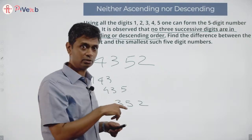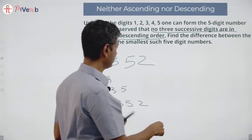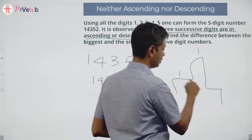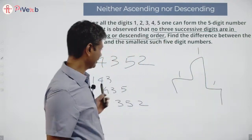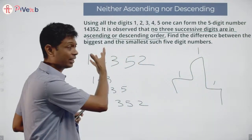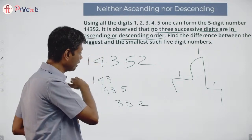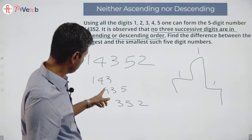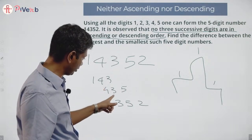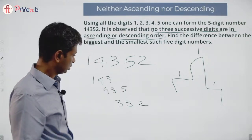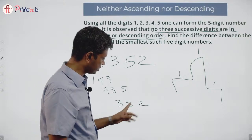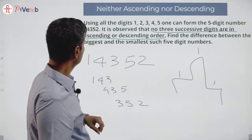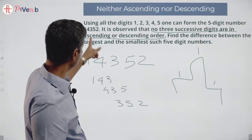It's like the Olympic podium — gold, silver, bronze — where the middle number is higher. So it's not ascending, not descending. The condition requires that any three successive digits you pick from the number must not be in ascending or descending order.